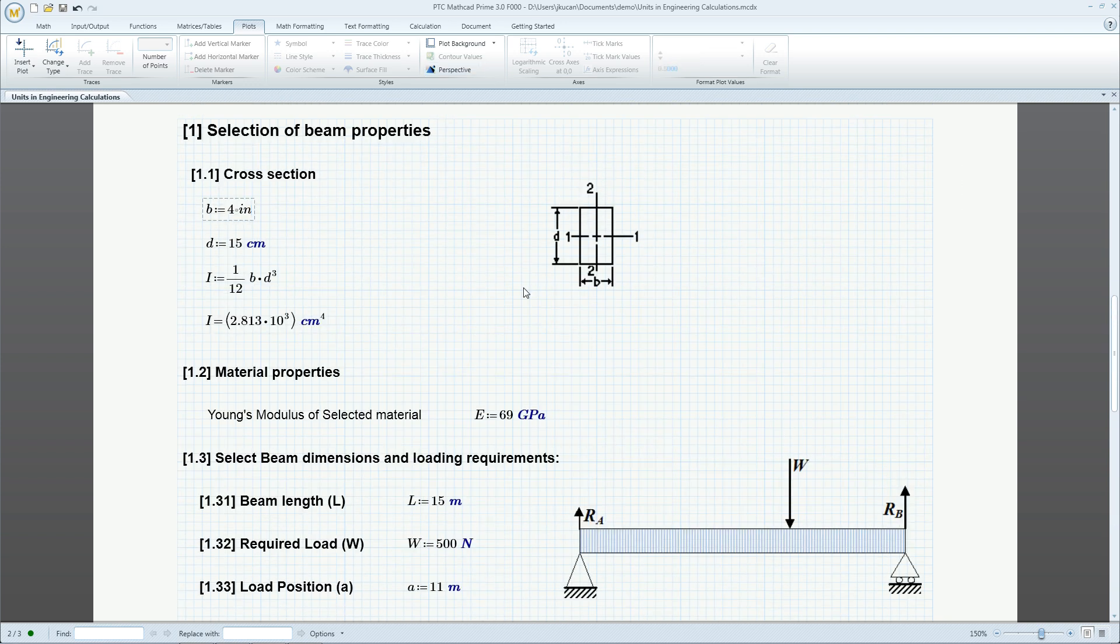Instead of centimeters, let's define the cross-section in inches. The moment of inertia is still in centimeters to the fourth power, but we can change it to inches.